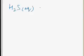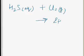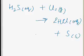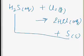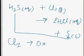Another example: H2S (aq) reacts with Cl2 (g) to produce 2HCl (aq) + S (s). Hydrogen sulfide is oxidized to sulfur. In this reaction, chlorine is the oxidizing agent.